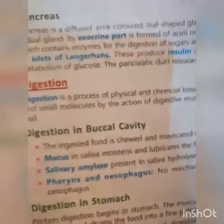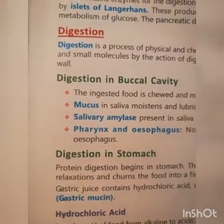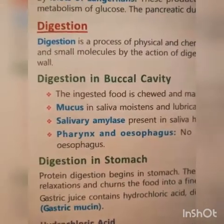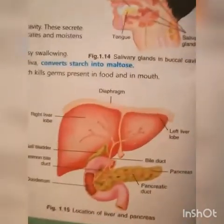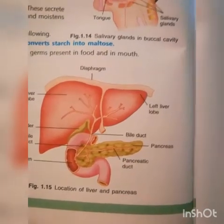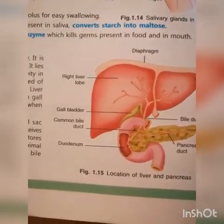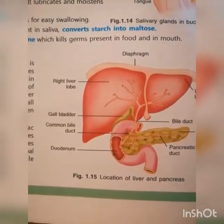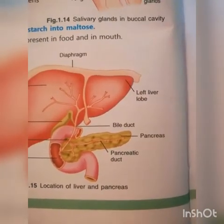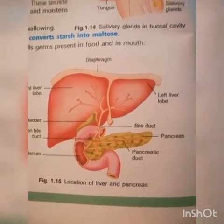See the figure of the associated glands with the alimentary canal, which help in the process of digestion. The labeled structures include: diaphragm, right liver lobe, left liver lobe, gallbladder, common bile duct, duodenum, bile duct, pancreas, and pancreatic duct. A duct is a tube through which secretions are released wherever they are required.